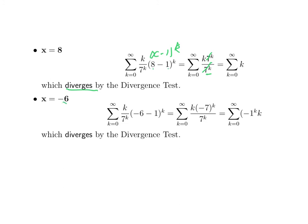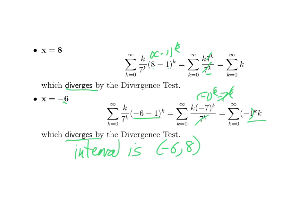How about negative 6? Something very similar happens. Now we have minus 6 minus 1, giving negative 7 to the k over 7 to the k. Those don't quite cancel out — negative 7 to the k is minus 1 to the k times 7 to the k. The 7 to the k's cancel, but we're left with minus 1 to the k times k. Still, the divergence test tells you this goes to infinity and does not converge to 0, so this series diverges at this point too. So the actual interval of convergence is minus 6 comma 8, open endpoints, because neither negative 6 nor 8 is included.